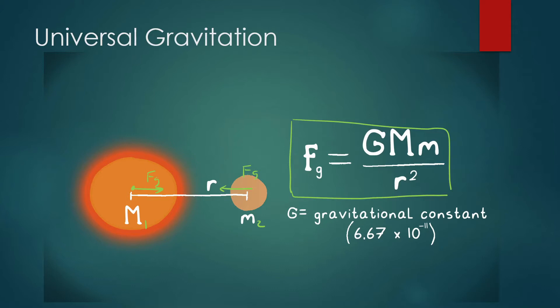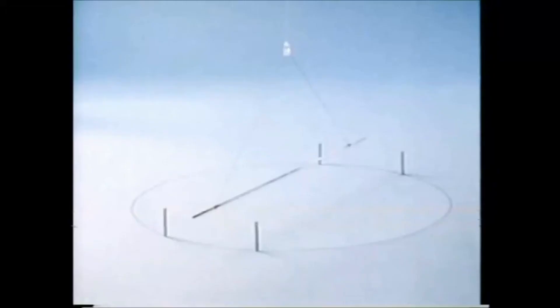Key things to know: any two objects that have mass have a gravitational attraction between them, whether they're small or big. Of course, the bigger they are, the more force of gravity there will be between them, and the closer they are, the more force of gravity there will be. Let's do problems to demonstrate this concept.